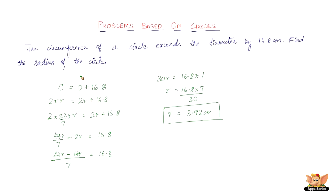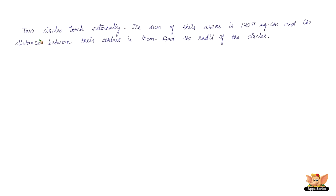All you had to do was write the key equation — once you do that, the rest is straightforward. Now let's solve another problem: two circles touch externally. Let's translate this into a diagram — this is just an illustration.